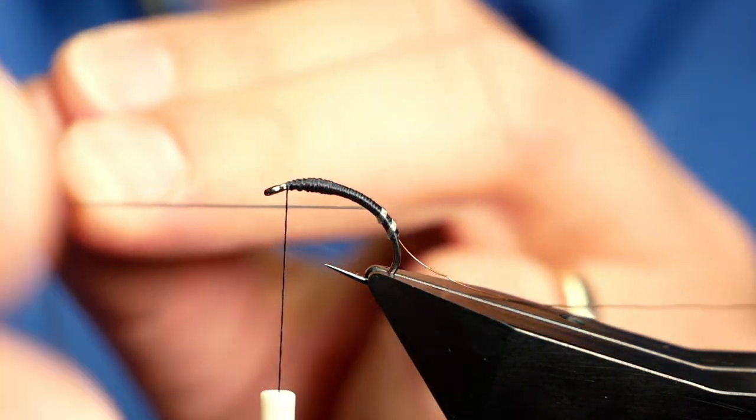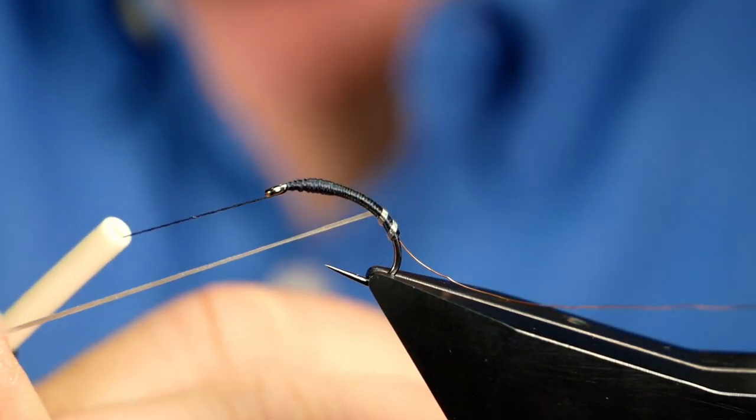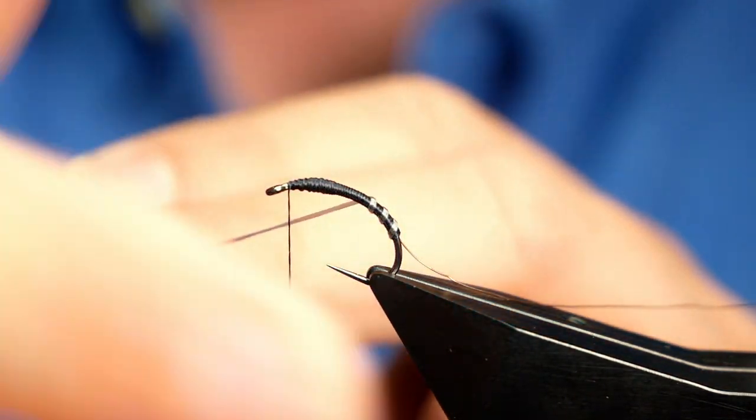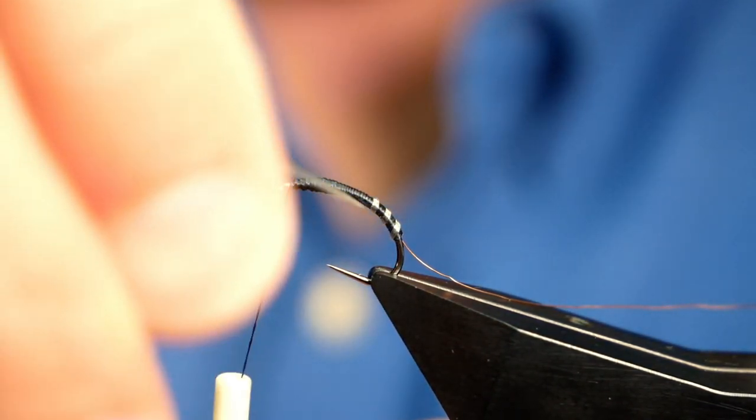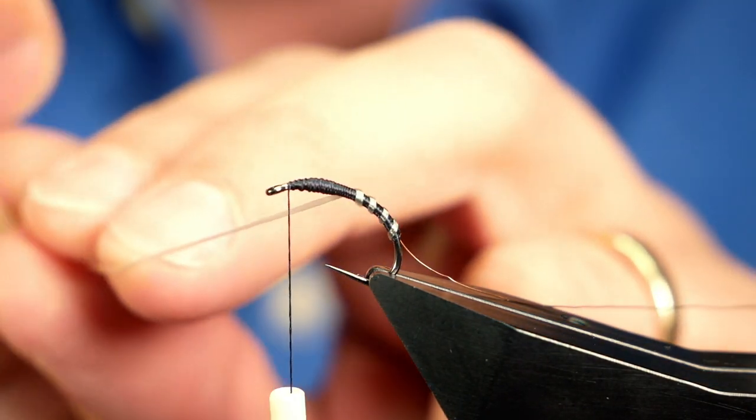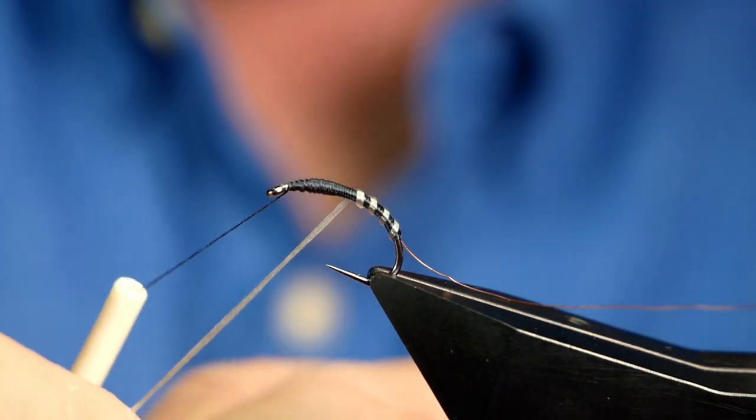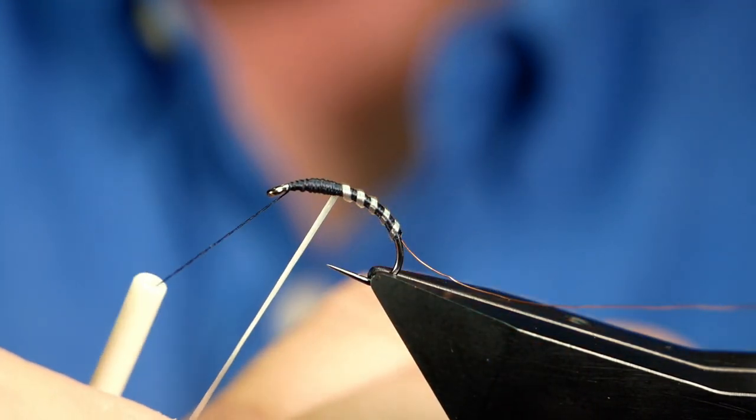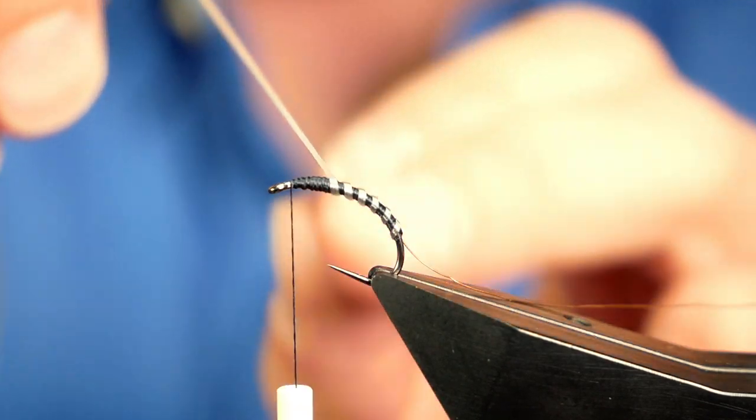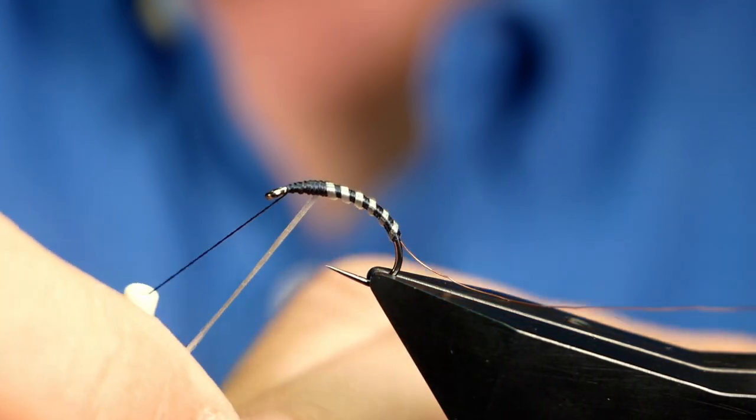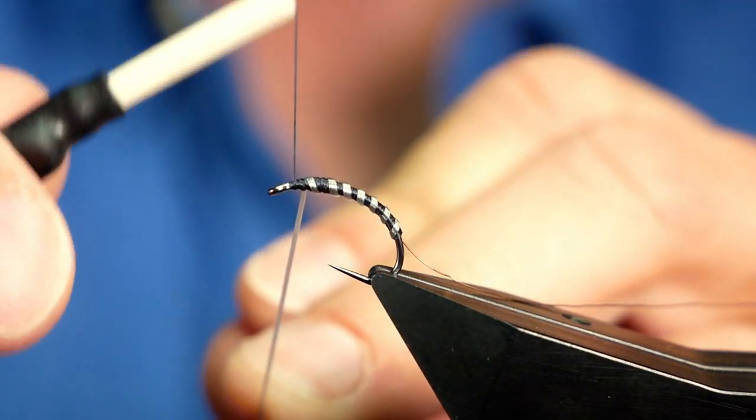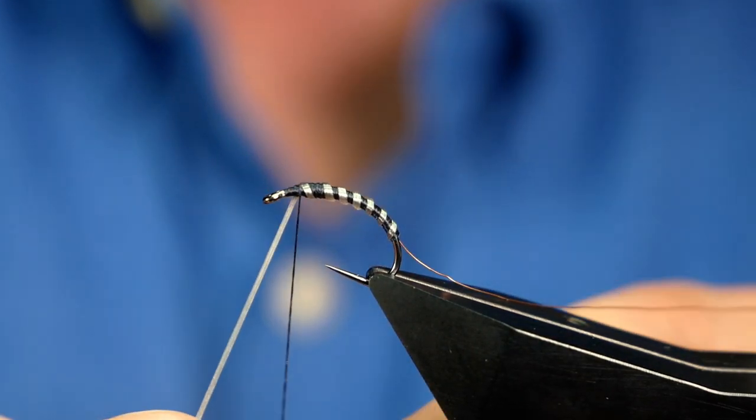And then as I come up I'll slowly release the pressure making it stand out a bit more from the body. Now what this does is it helps with the taper and if you look at a natural buzzer in the water you'll notice that it's quite heavily tapered from the thorax down to the tail. So that's just what I'm trying to emulate or imitate here. So I'll just bring my thread back a couple of turns to catch that flexi-floss into place.